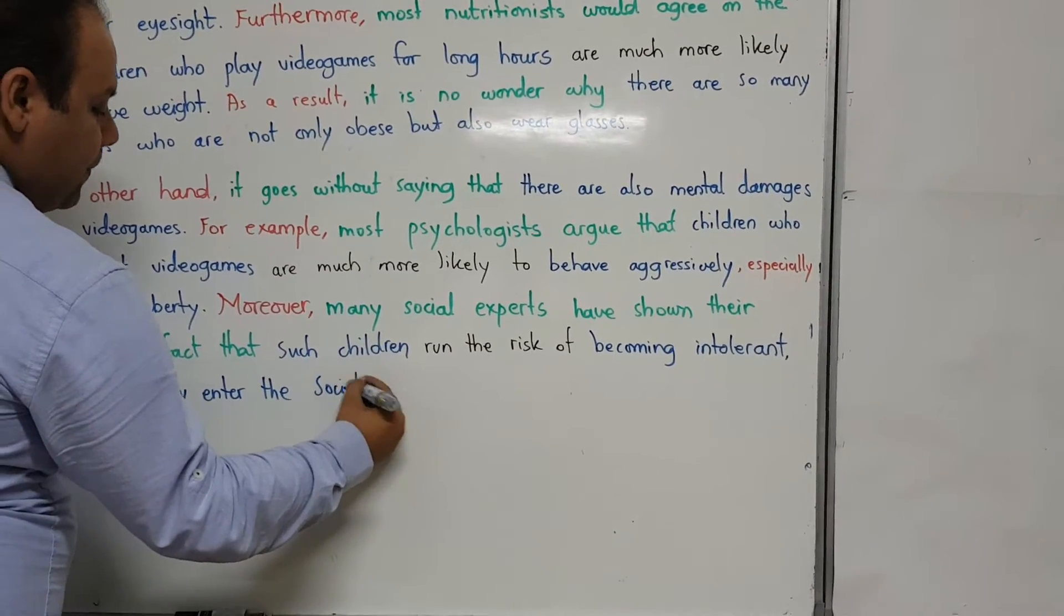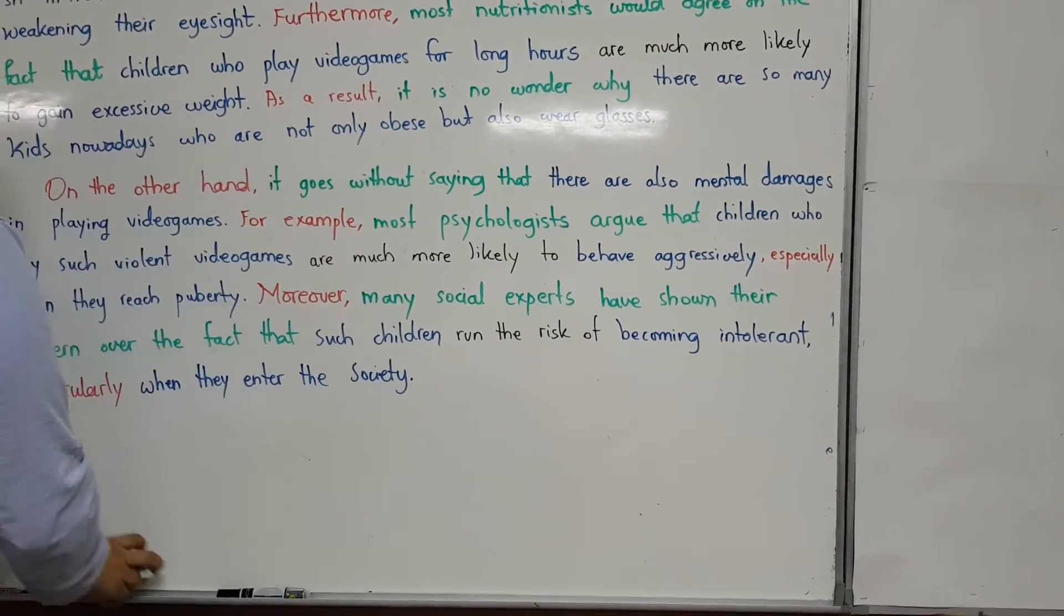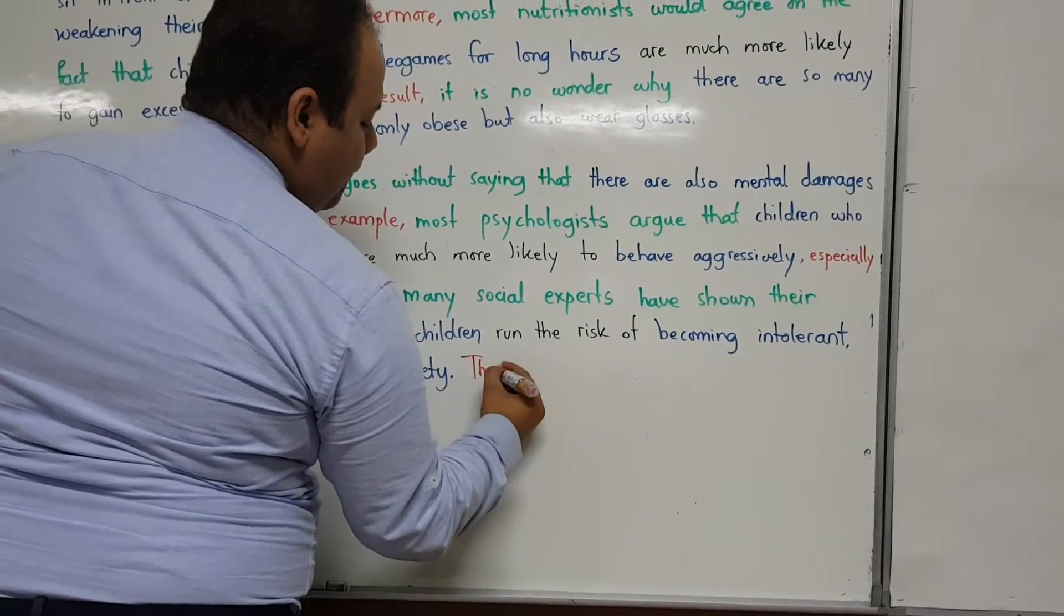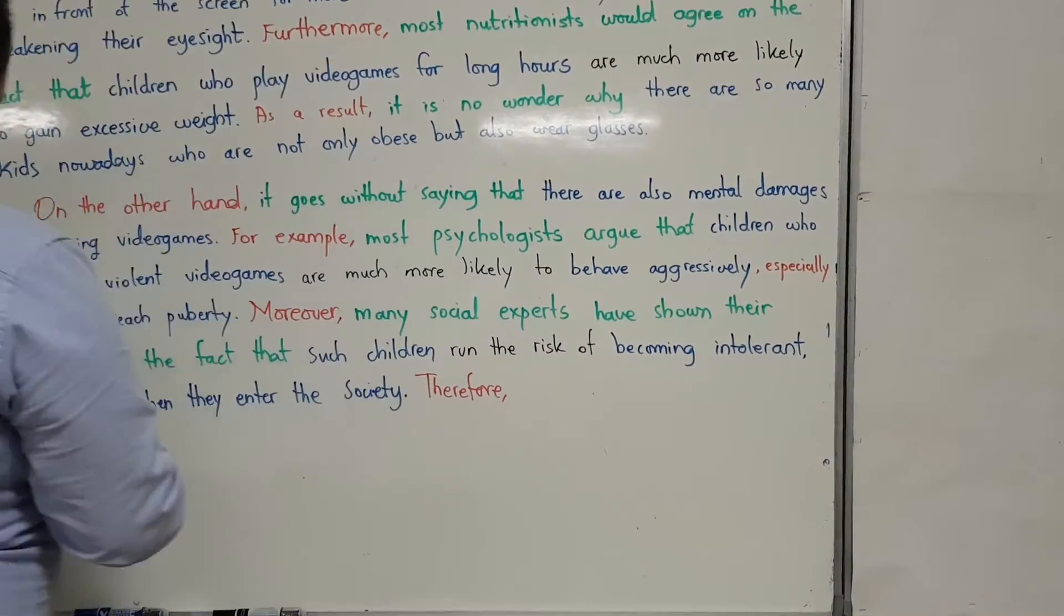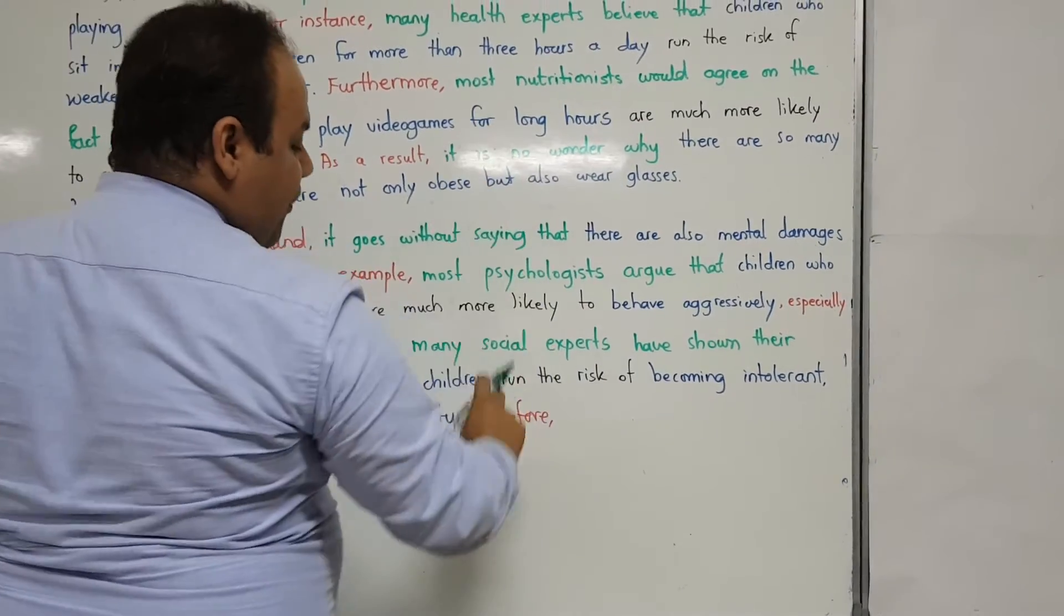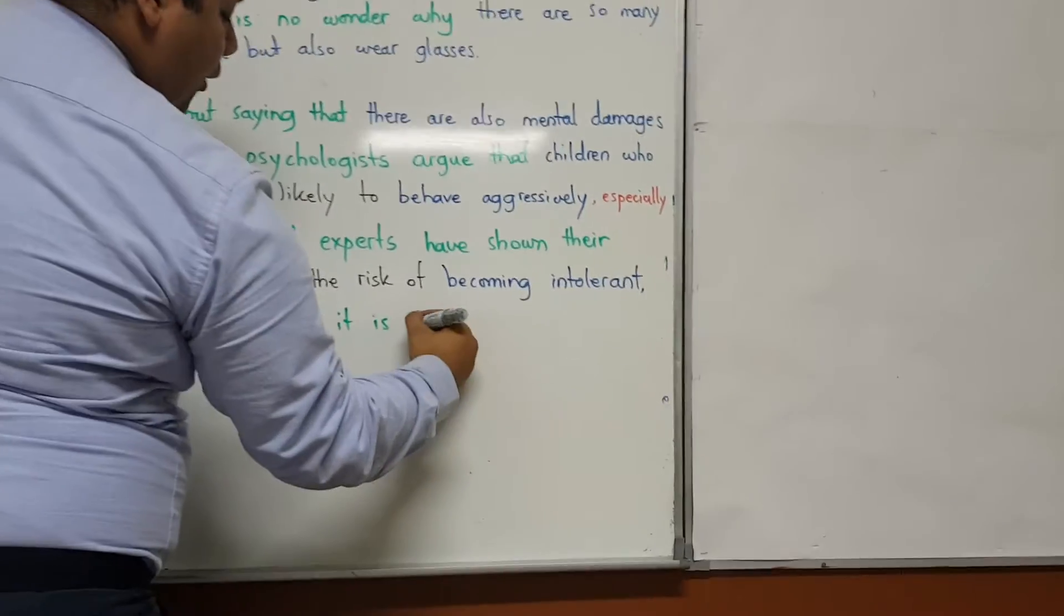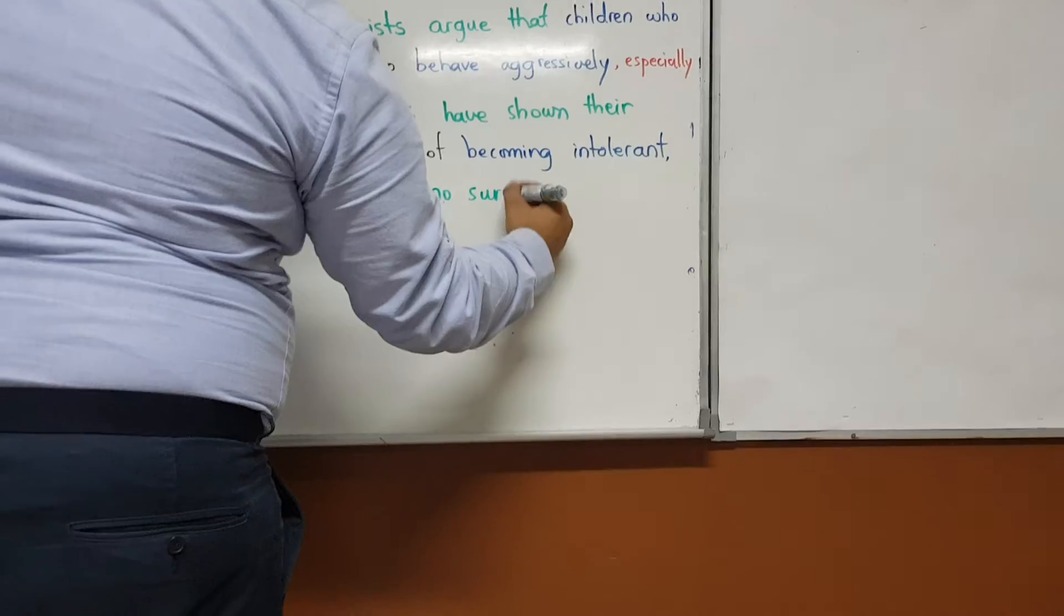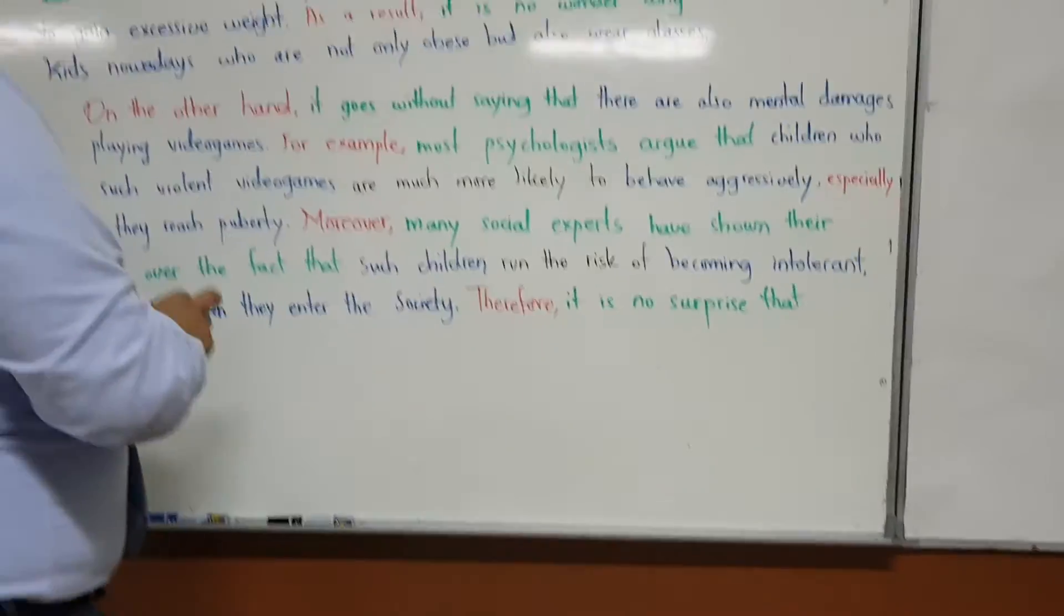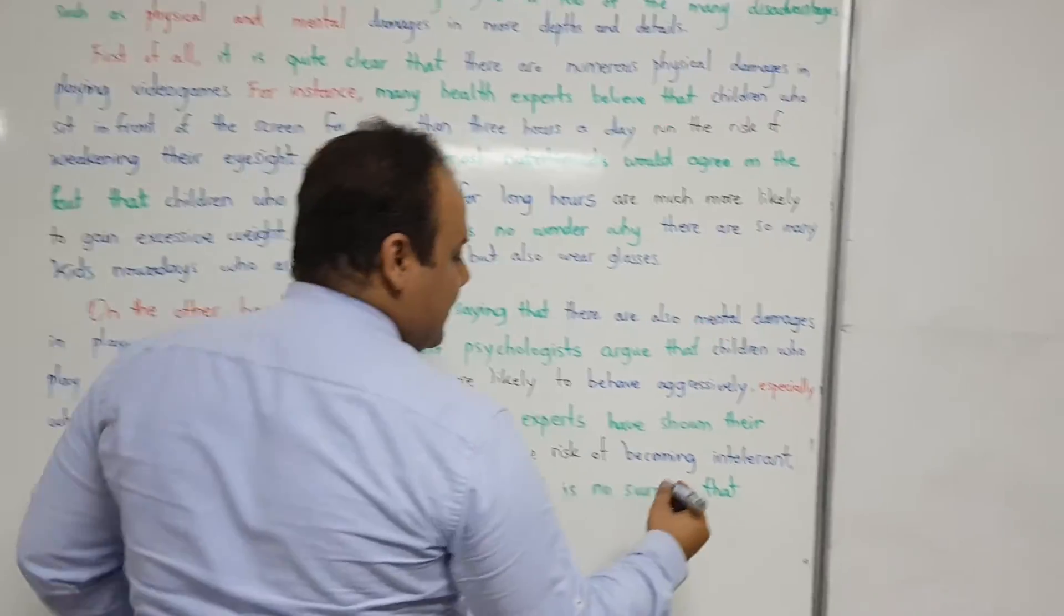And remember, a good paragraph is a paragraph that ends with a mini conclusion. So here I said as a result, and now I'm going to say therefore. So therefore, here I said it is no wonder why, now I'm going to say therefore it is no surprise that.